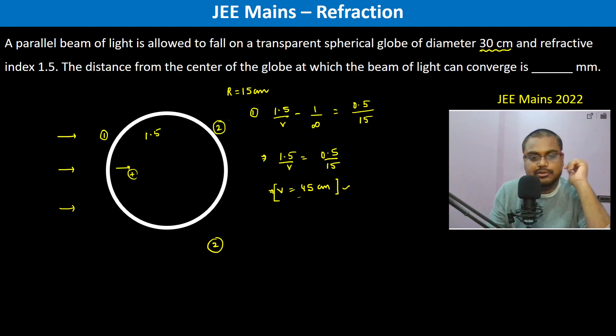For the second refraction, u will be positive 15 cm because this is 30 cm diameter, so ahead it will be plus 15. So μ₂/v minus μ₁/u. 1/v minus 1.5/u, u is positive 15 because it is ahead. Is equal to μ₂ minus μ₁, 1 minus 1.5 divided by r, r is minus 15.